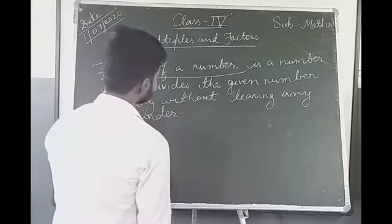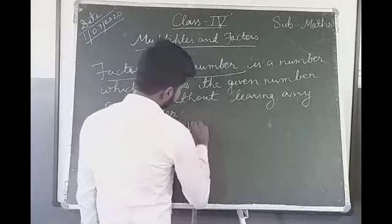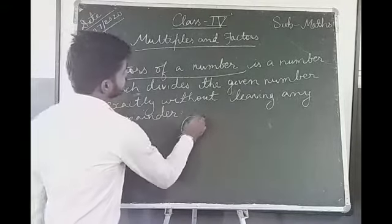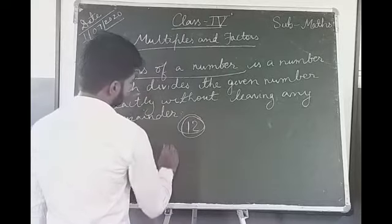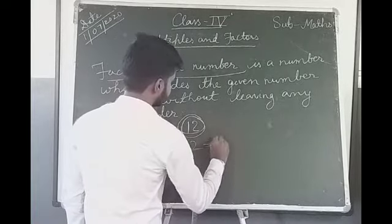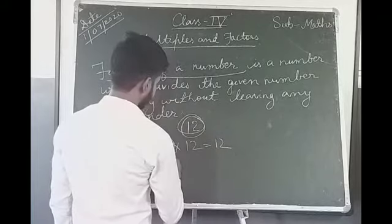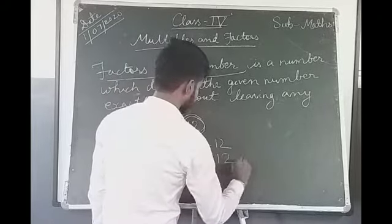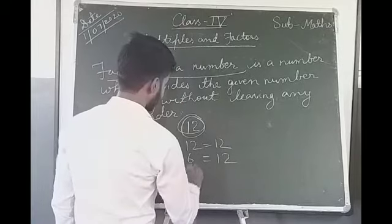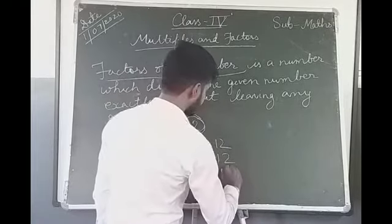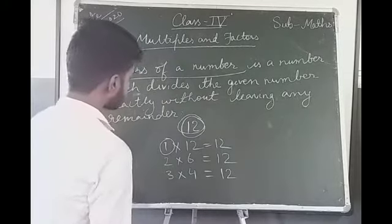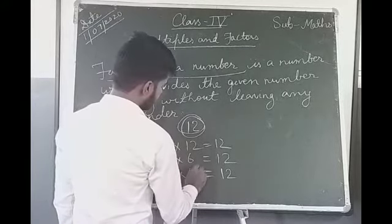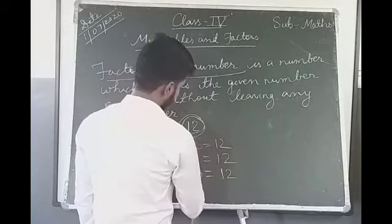For this we will see an example. Suppose we take the number 12. From which tables is 12 divisible? 1 into 12 is 12. 2 into 6 is 12. 3 into 4 is 12. So the factors of 12 are: 1, 2, 3, 4, 6 and 12.